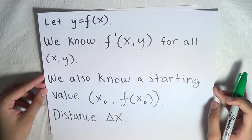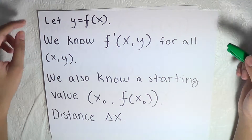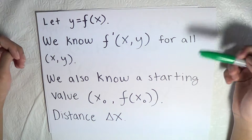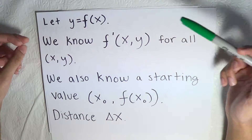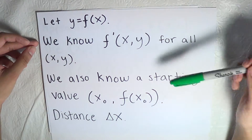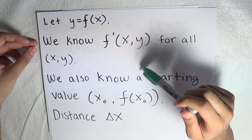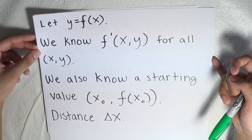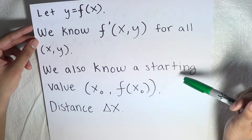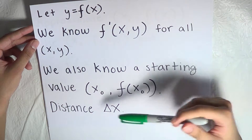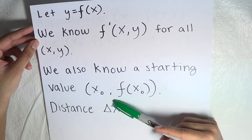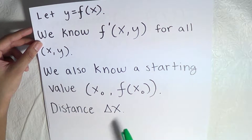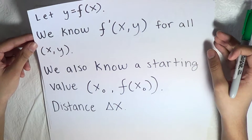Let's look at some algebra that will help us understand what is behind Euler's Method. Euler's Method is something we use when we are given a derivative function and a starting point. Let's say that y equals f of x and we know the slope or derivative of a function in terms of x and y for all x and y values. We also know the starting value of the original function, represented by x sub 0 and f of x sub 0, and we are given a fixed distance or interval delta x.